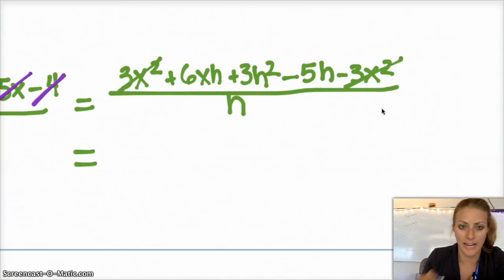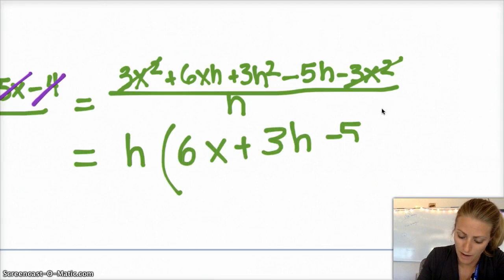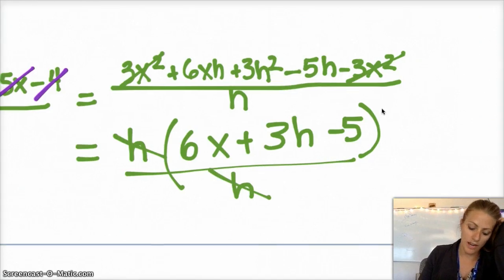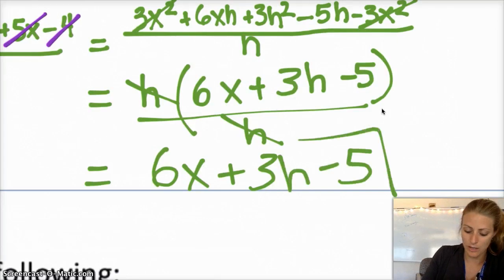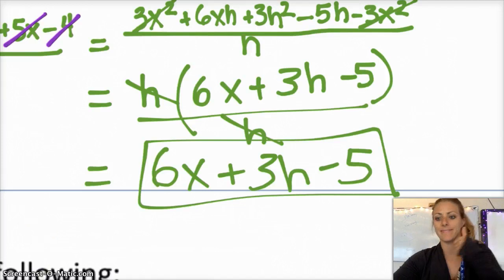So I can actually pull an h out. So it would be h times 6x plus 3h minus 5, divided by h. And since I have multiplication and division, those cancel. And so the entire thing simplifies to 6x plus 3h minus 5. So that would be your final difference quotient simplified.